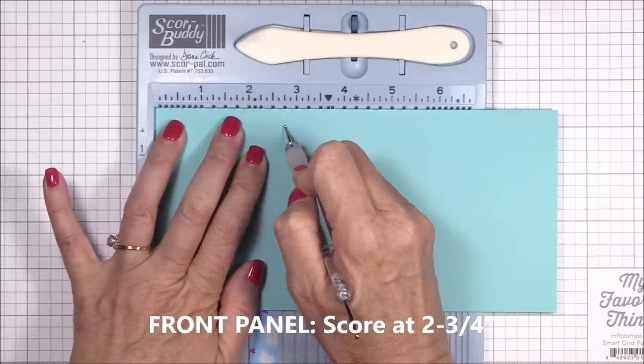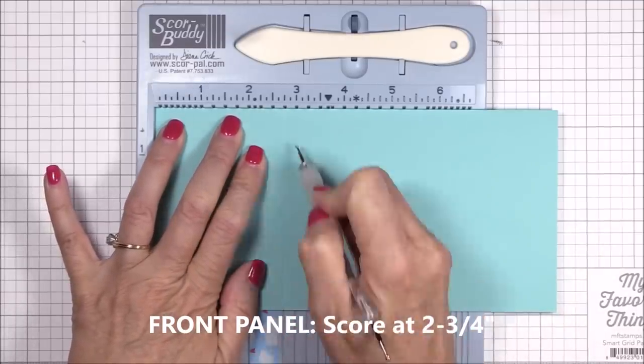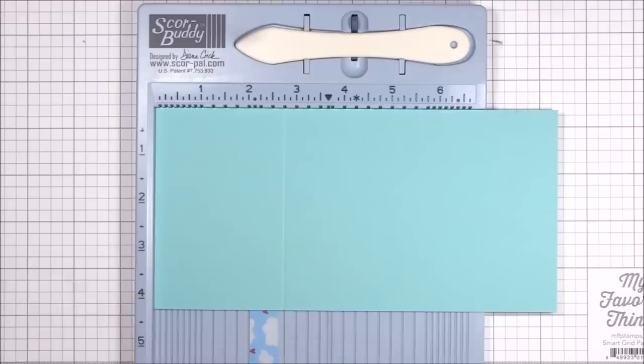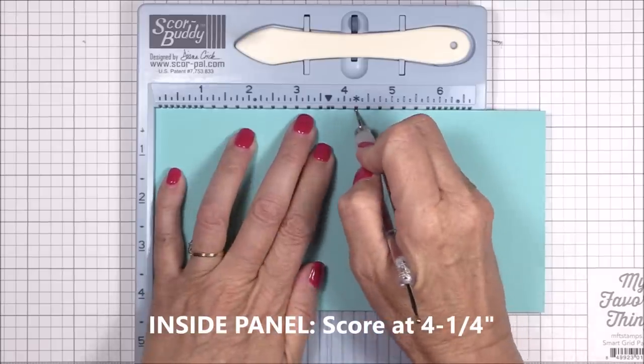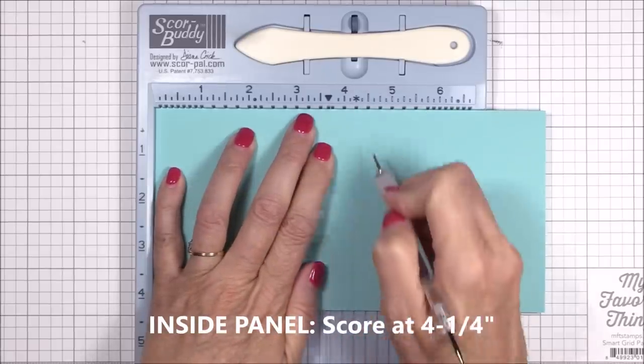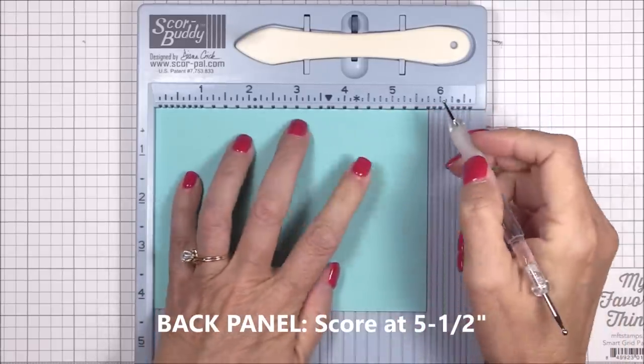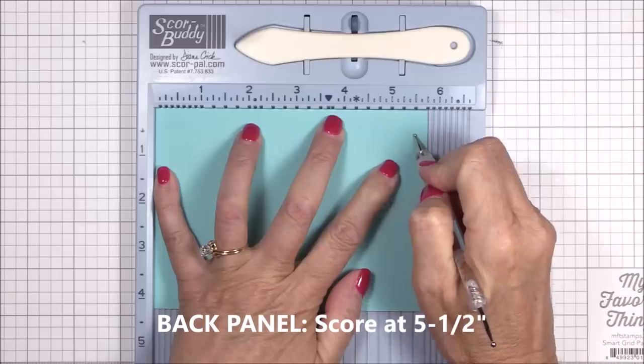Once you've trimmed your panels, you'll need to do some scoring. On the front panel, you'll need to score at 2¾ inches from the left edge. On the inside panel, you'll need to score at 4¼ inches from the left edge. And then on the back panel, you'll score at 5½ inches from the left edge.